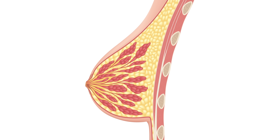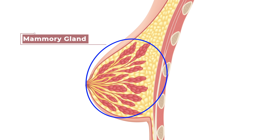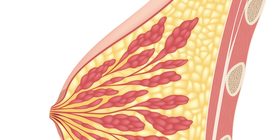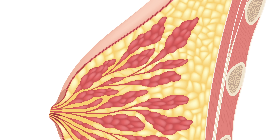There is a mammary gland within each breast, which is actually a modified sweat gland that produces milk. Each mammary gland is made up of about 15 to 20 lobes — you can see one of those circled in this picture. These lobes are separated by variable amounts of adipose tissue, which is one of the things that contributes to the variability in overall breast size.